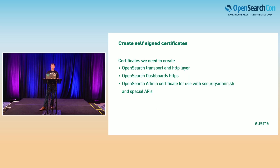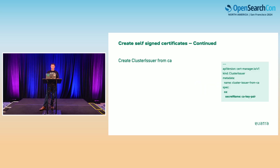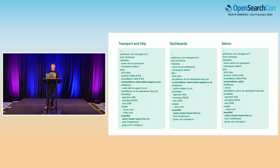Once we have that self-signed certificate authority, we can create the certificates we need off of that authority. We're going to create transport and HTTP layer certificates, dashboard certificates, and the admin certificate for use with security admin and other APIs. We create a cluster issuer as before, but now we specify which CA needs to sign this certificate. We then create all the different certificates for transport, HTTP, dashboards, and admin. You can configure the durations and usage. The important part for node certificates is that the usage must include both server auth and client auth, because they act as both clients and servers when communicating with each other.